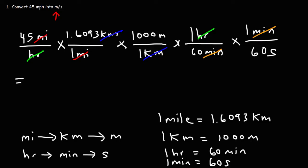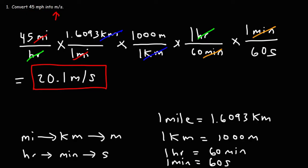So hopefully you have your calculator with you. Let's plug in the numbers: it's going to be 45 times 1.6093 times 1,000, divided by 60, and then take that result and divide by 60 again. You should get the answer 20.1 meters per second. So that's equivalent to 45 miles per hour — now you know how to convert miles per hour into meters per second.